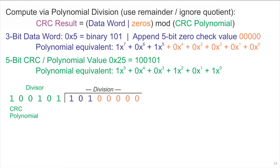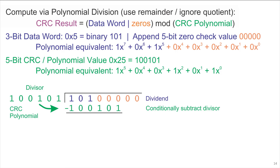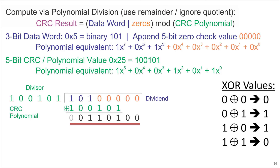As with any long division, you first do a trial subtraction and see if the result fits into the remaining dividend. In this case, the divisor 100101 does fit, so we do a subtraction. But it's not an ordinary subtraction because this is polynomial math — we do it on a coefficient-by-coefficient basis, and because the coefficients are limited to binary values, we use an XOR operation, Exclusive OR. That gives us a result of 001101 and two more zeros pulled down from the dividend. The top coefficient is 0, which is the point of any long division algorithm.